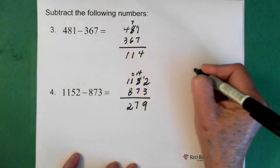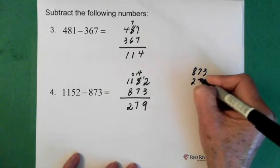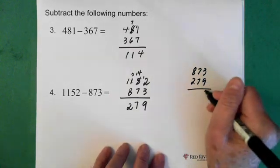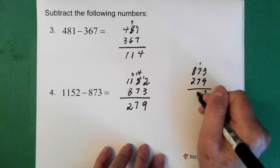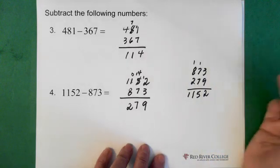And then again, if you're not feeling sure about that, you just take your numbers and add them together to see if it's right. So this is a 2, carry the 1, that's a 5, carry the 1, 1, 1. So then that tells us we're okay.